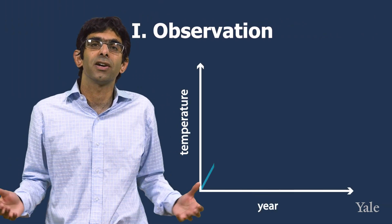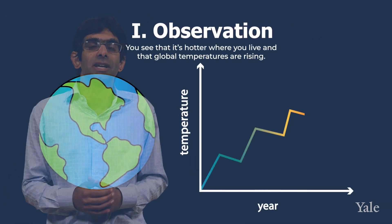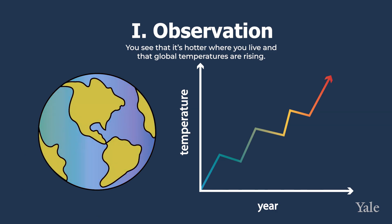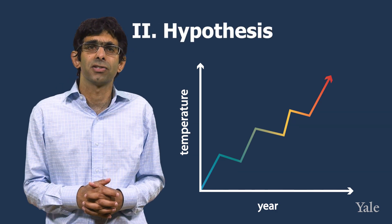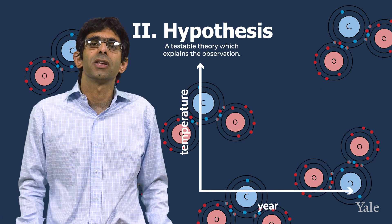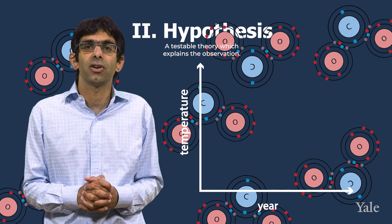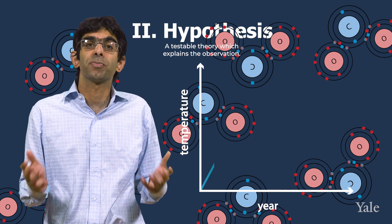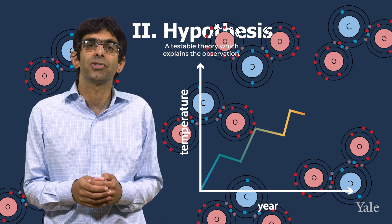The scientific method normally involves the following steps. Initially you make an observation. For example, you notice that it is hotter where you live and global temperatures are rising. Then you generate a hypothesis to explain that observation. You might propose that the increased amount of carbon dioxide in the atmosphere is responsible for the increase in temperature.